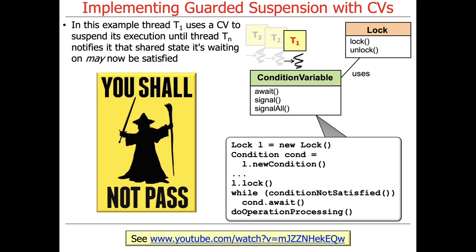In this use case, we have a couple of threads involved. Thread T1 uses a condition variable and a reentrant lock to suspend its execution until thread TN — some other thread — notifies it that the shared state it's waiting for may now be satisfied. Note the word 'may' — that's key, and it introduces some subtlety I'll explain carefully.